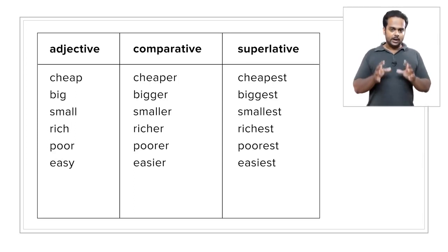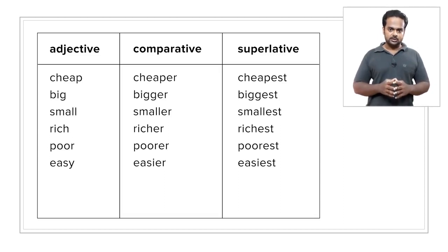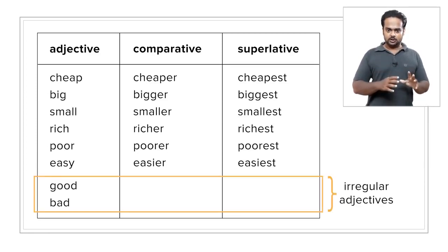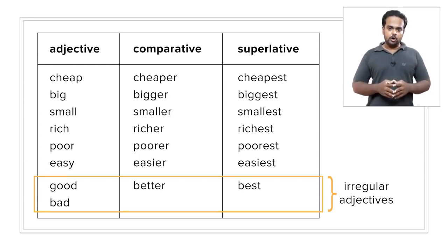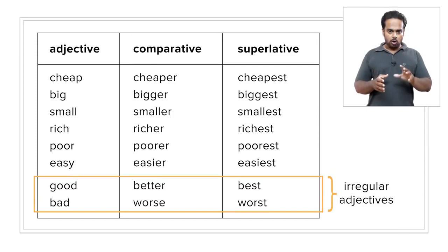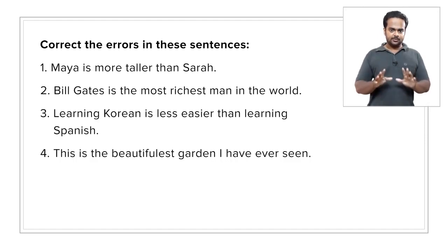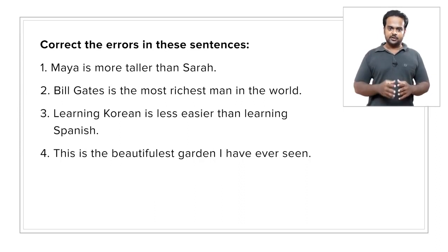Some adjectives are called irregular because you cannot guess their comparative and superlative forms. For example, to compare using the adjective good, we don't say gooder and goodest — we say better and best. Similarly, do you know the comparative and superlative forms of bad? Bad, worse, and worst. So with these in mind, here are a few example sentences — all of them have mistakes in them. I would like you to stop the video, think about how you would correct these sentences, and then play the video and check.